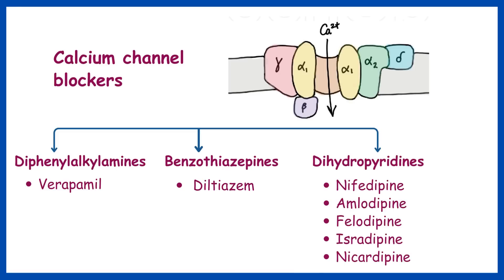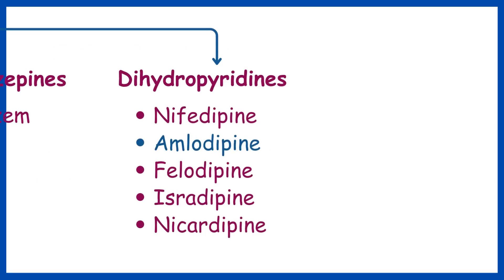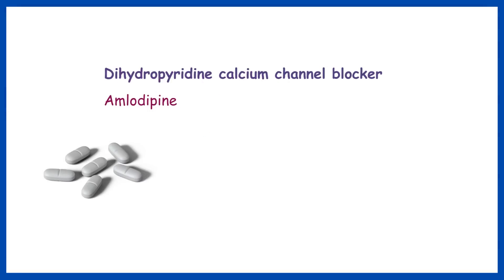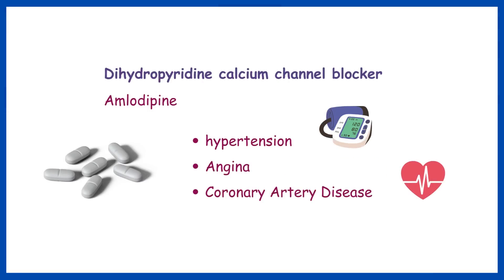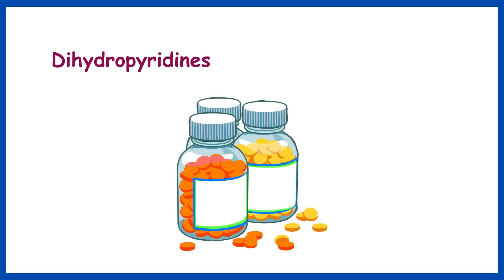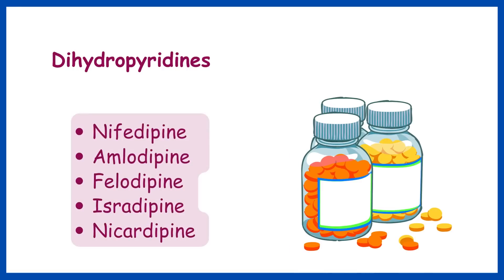Amlodipine is a dihydropyridine calcium channel blocker. It is commonly used for the treatment of hypertension, angina, and coronary artery disease. Other drugs coming under this class include nifedipine, felodipine, isradipine, nicardipine, etc.